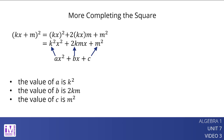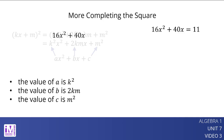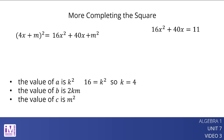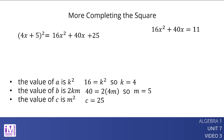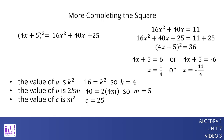We can use this pattern to solve quadratic equations. Let's look at 16x squared plus 40x equals 11. Here, 16 is a, or k squared, so k is 4, and the factors could be the quantity 4x plus m squared. Since 40 equals 2 times 4m, m equals 5. Because c is m squared, c is 25. So, 16x squared plus 40x plus 25 is a perfect square equivalent to the quantity 4x plus 5 squared. We can now solve the equation by completing the square, giving x equals 1 fourth and x equals negative 11 over 4.